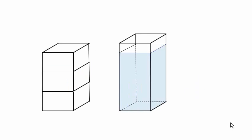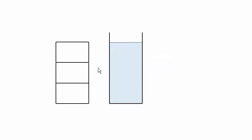Let's take a look at the simplest example first: a container with parallel sides, like this one, with water inside, and compare it to a stack of wooden blocks. I'm better at drawing cross-section views, so that's what I have here.